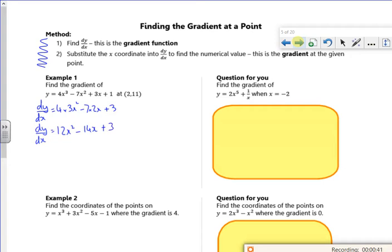Right, so now I'm going to do it at x is 2. So when x is 2, dy by dx will be 12 lots of 2 squared minus 14 lots of 2 plus 3. So dy by dx will be 23.